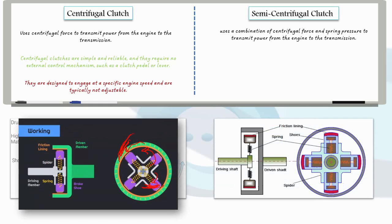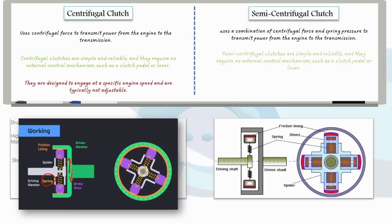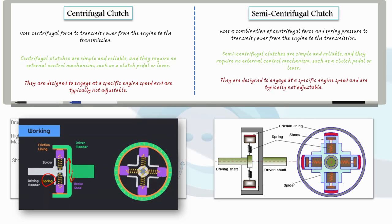Lastly, we have the semi-centrifugal clutch which combines centrifugal force and spring pressure for power transmission. Similar to the centrifugal clutch, it utilizes a clutch drum and clutch shoes. The addition of spring pressure ensures smooth engagement and disengagement. While it offers simplicity and reliability and requires no external control mechanism such as a clutch pedal or lever, it also has limitations in high torque applications which makes them unsuitable for use in large engines or vehicles that require high torque output.